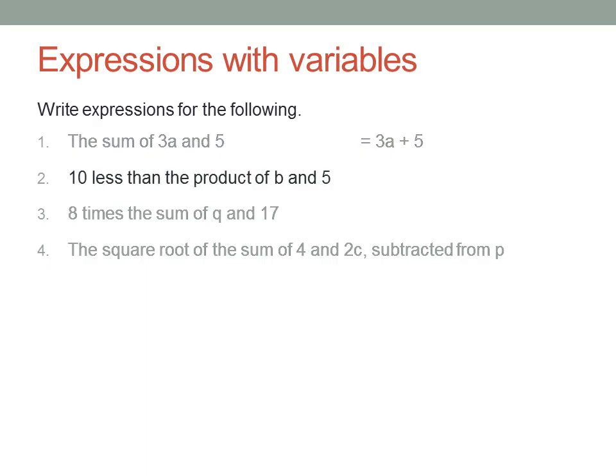10 less than the product of b and 5. Well, 10 less than the product means we have to subtract 10 from the product. And by convention, we write the product of b and 5 as 5b. You can write b times 5 if you like, but by convention we normally write the 5 as a coefficient of the variable b. Again, no brackets are needed, because the product is a multiplication, which happens before the subtraction.